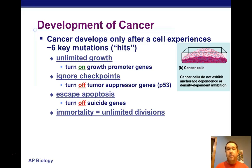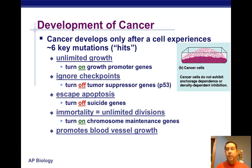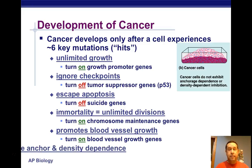Most cells can only divide a certain number of times because of the telomeres and telomerase, but cancer cells become immortal — their telomerase gene gets reactivated. Cancer also promotes blood vessel growth, which allows the cancer to have plenty of nutrients and sometimes to spread or metastasize. Additionally, cancer cells overcome anchor and density-dependent inhibition — they don't have to attach to something to grow, and they don't have contact inhibition.